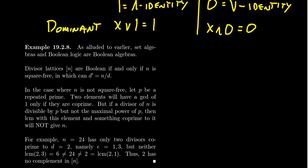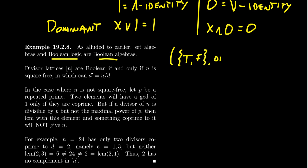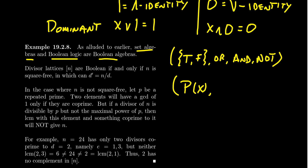Boolean logic is the poster child of a Boolean algebra — that's why they're both called Boolean, named after Boole. In Boolean logic you only have two elements, true and false, with operations of 'or' and 'and,' and complements corresponding to 'not.' This satisfies the axioms of a Boolean algebra. In set algebra you also have a Boolean algebra structure where X is any set, finite or infinite. You take unions and intersections and complements — the set difference from the total set — and this gives you a Boolean algebra structure.